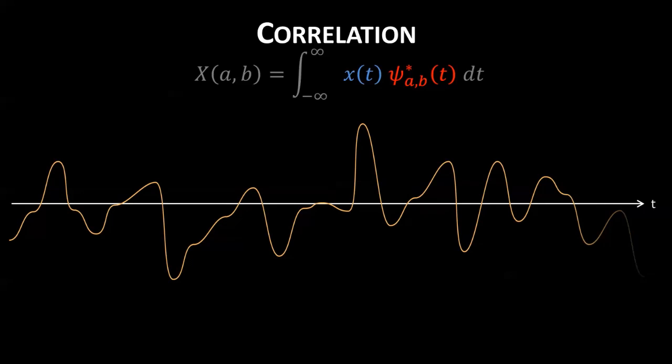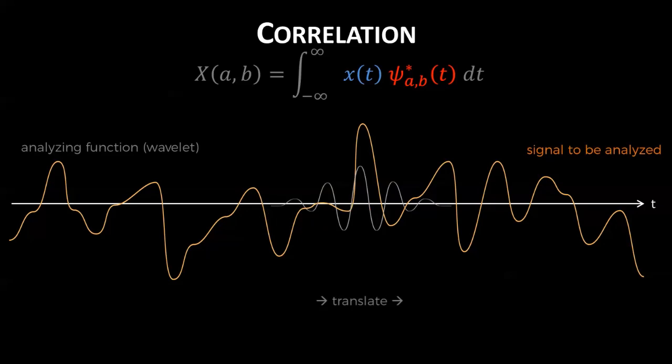Take a random signal in time. We can take an analyzing function, the wavelet, and translate the wavelet in time so that it encompasses the entire signal, multiplying each point of the signal in the region with a point on the wavelet.